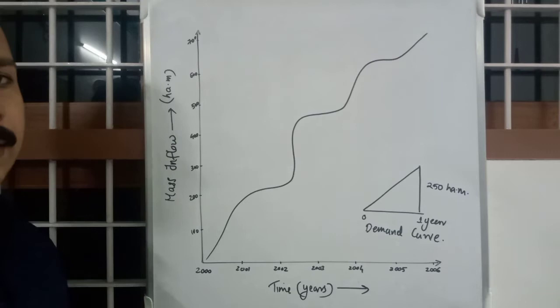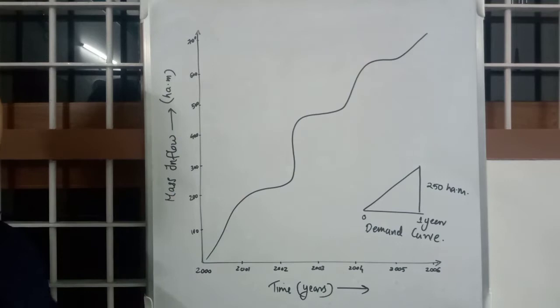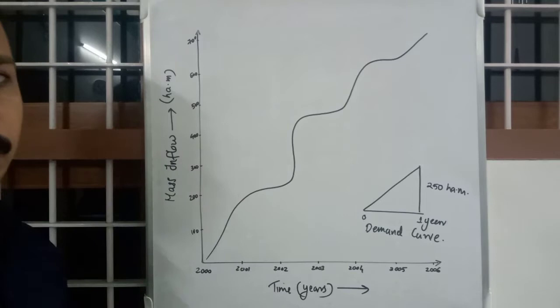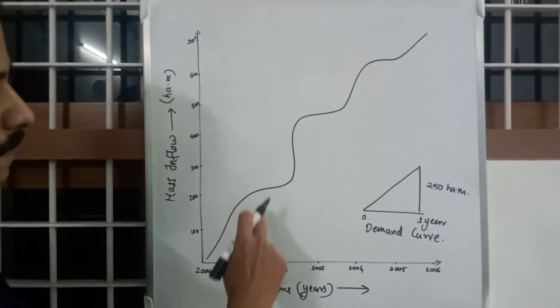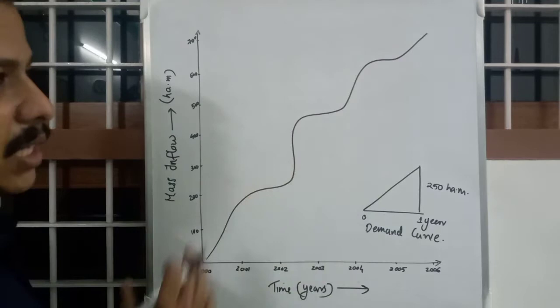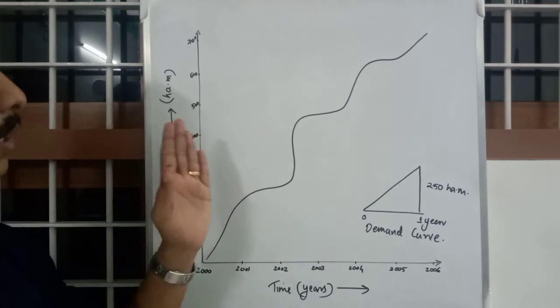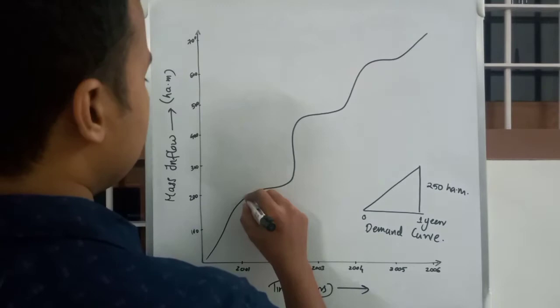We are going to calculate storage capacity for the reservoir with this mass inflow curve. The first step is getting these two graphs ready. This mass inflow curve will be constructed from the flood hydrograph of the area. From the flood hydrograph we calculate areas, interpolate ordinates, and construct the mass inflow curve. The demand curve data will be available to you.